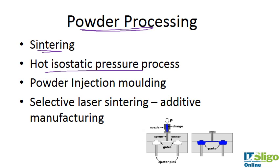Hot isostatic pressure processing is a combination of sintering under pressure. This is more favorable than pure sintering because the pressure is equal in all directions, and the system is under pressure during sintering. This eliminates micro cracks and any voids, so you get superior mechanical properties using hot isostatic pressure processing.